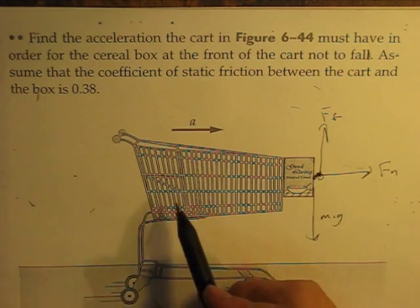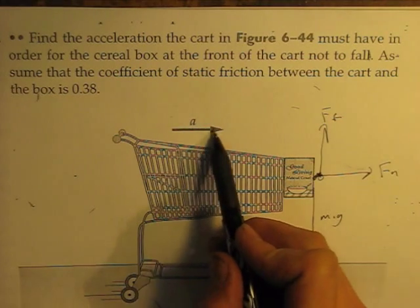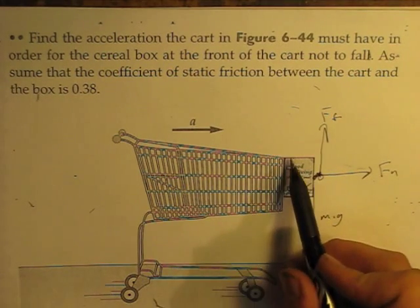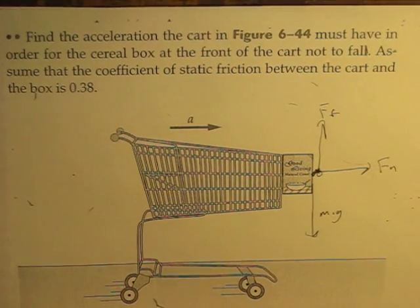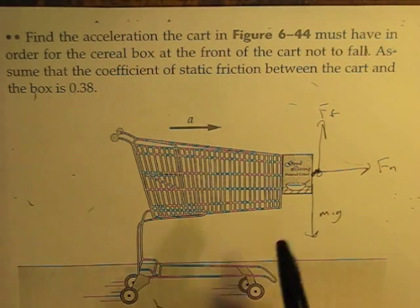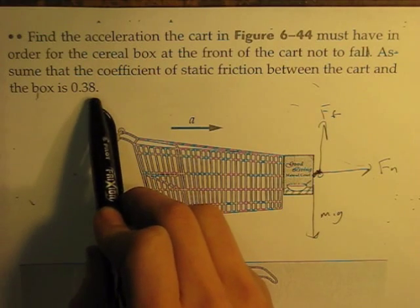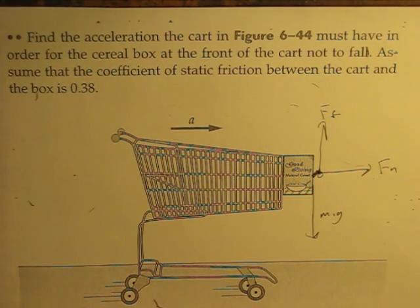It's just asking how fast does this shopping cart need to accelerate for this cereal box right here to stay connected to the cart instead of falling down. So it's asking for acceleration, and it also tells us that the coefficient of friction between the cereal box and the cart is 0.38.